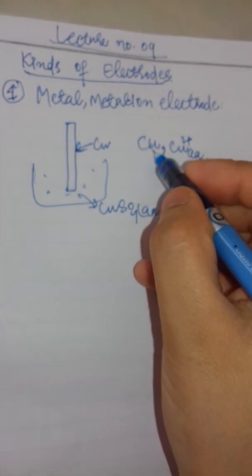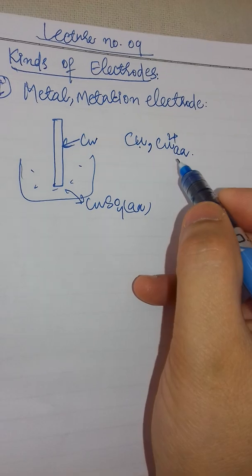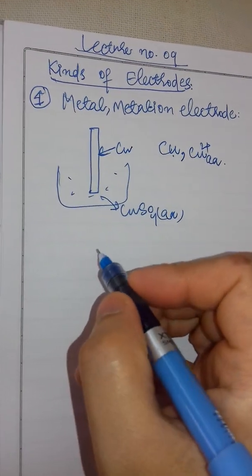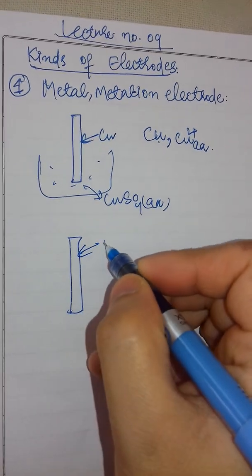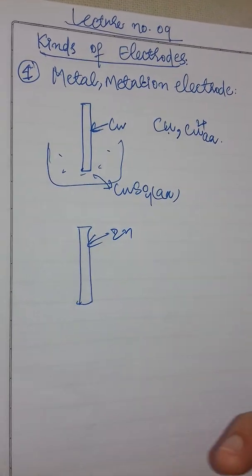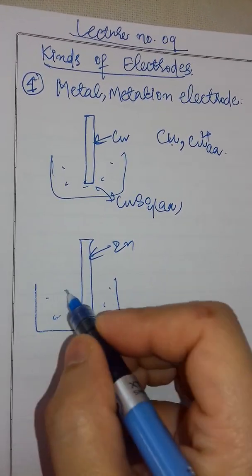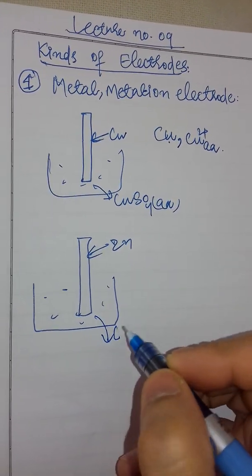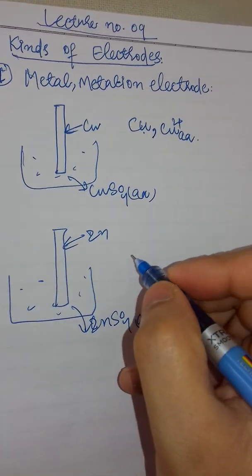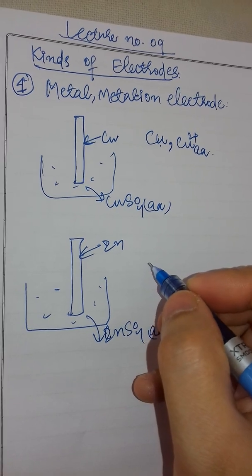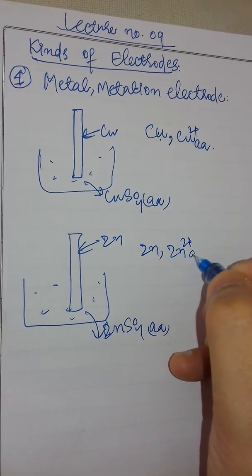So, the metal-metal ion electrode — another example is zinc. This is a good example you have used because you have already studied it. Zinc will be dipped in a zinc sulfate aqueous solution. Can you represent it schematically? So: Zn | Zn²⁺ aqueous.